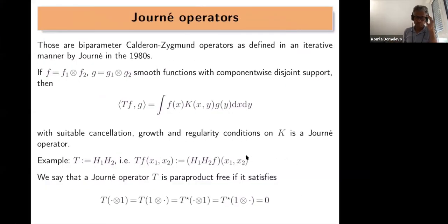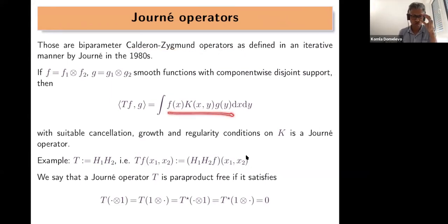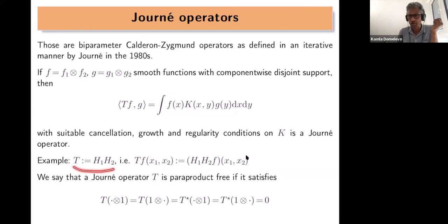Regarding matrix weights: Journé operators are a generalization of Calderón-Zygmund operators for several parameters. They are defined by a kernel that has suitable cancellation, growth, and regularity conditions. As an example, the Hilbert transform in the first variable and the Hilbert transform in the second variable successively applied to a function F of two variables is a Journé operator. We say a Journé operator is paraproduct-free if, when one of the two functions in the tensor product is constant, the operator delivers zero.